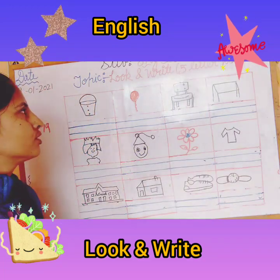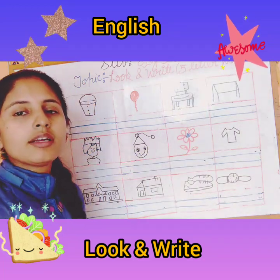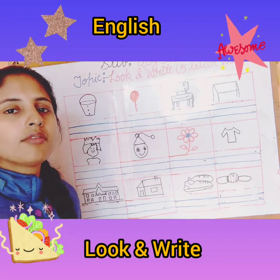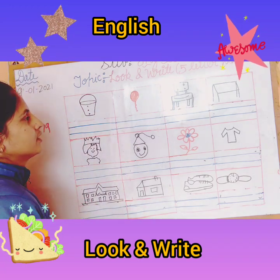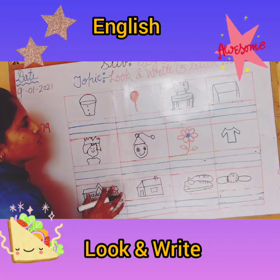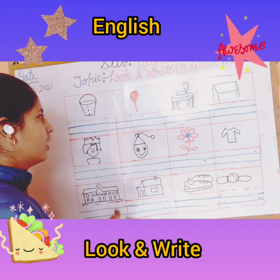Now, see on page number 79, we have Look and Write. In this, you have to look at the pictures and write down their spelling.